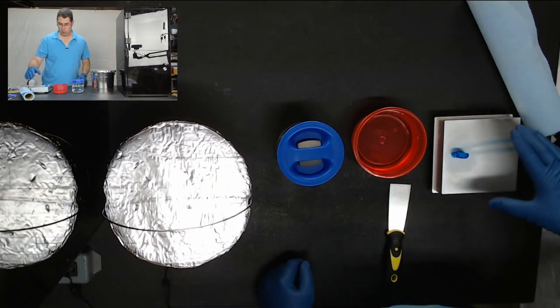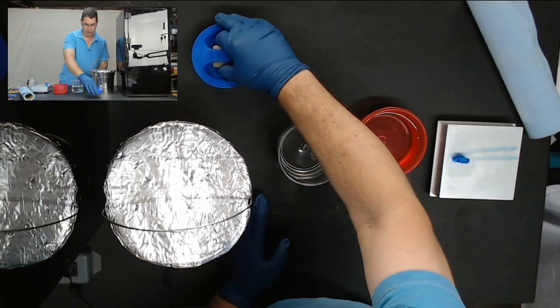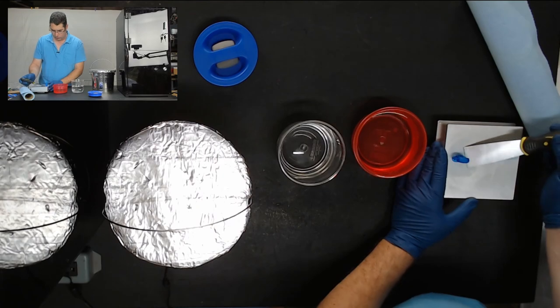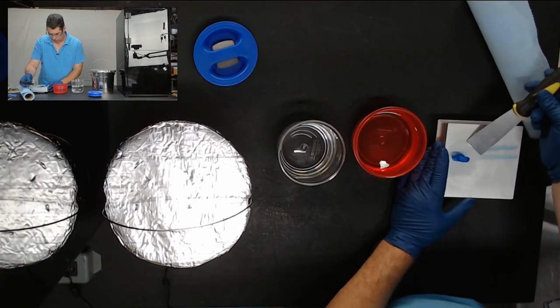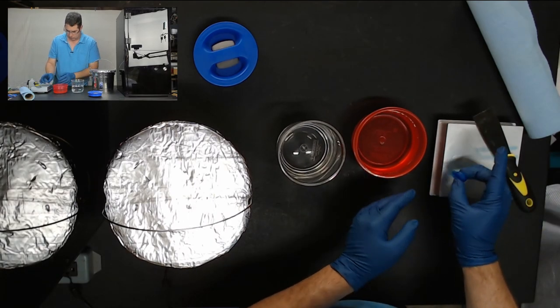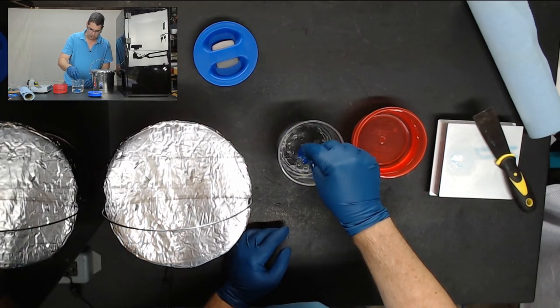So, for now, we're going to start off by taking the top off of this, and we're going to use the scraper that's included with the Moai to try to bump this off the build plate, get it loose, and then we're going to dunk it into the alcohol.